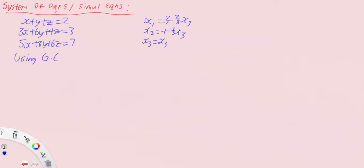For the newer GCs, you'll see something like x, y, and z. But it should be the same thing.